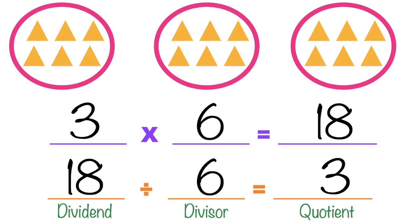As you can see, from the multiplication sentence 3 times 6 equals 18, our division sentence is 18 divided by 6 equals 3. Multiplication and division are inverse operations — that means opposite. When you look at the multiplication sentence from right to left, you can see 18, 6, and 3, which gives the division sentence.